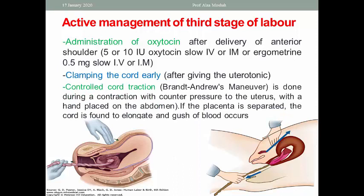Controlled cord traction, also called the Brandt-Andrews maneuver, is done during contraction with counter pressure to the uterus with a hand placed on the abdomen. If the placenta is separated, the cord is found to elongate and a gush of blood occurs — these are signs of separation. Please remember: controlled cord traction requires cord traction only during uterine contraction, while the other abdominal hand pushes the uterus up.